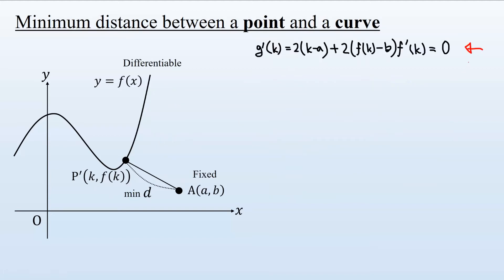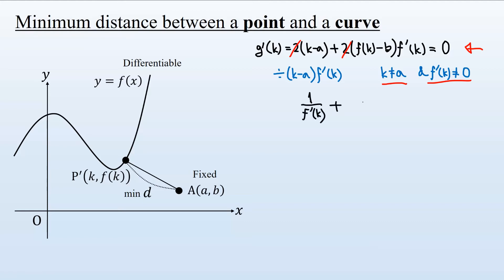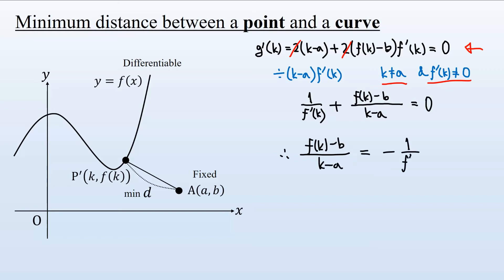Rearranging this: first we cancel out the 2, then divide both sides by (k minus a) times f'(k), assuming k is not equal to a and f'(k) is non-zero. The first term becomes 1 over f'(k), and the second term becomes (f(k) minus b) over (k minus a). Therefore, (f(k) minus b) over (k minus a) equals minus 1 over f'(k).